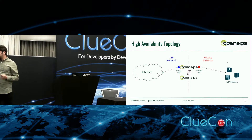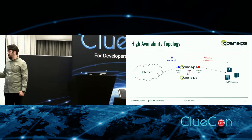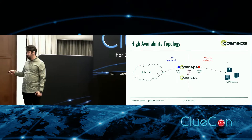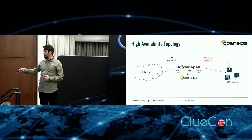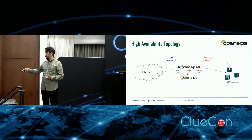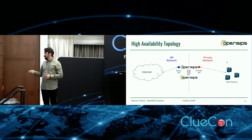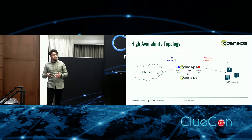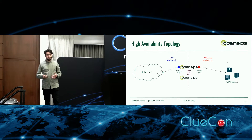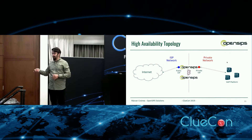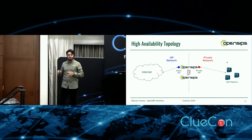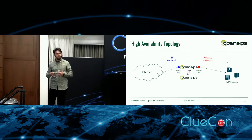In terms of topology, we have a public IP on one side, a private network on the other, and two OpenSips instances. Each listens on two different virtual IPs — the public virtual IP and the private virtual IP. However, these two interfaces are only available on the active node. I'm talking about a classic high-availability active-backup topology, not anycast where both can be active simultaneously.